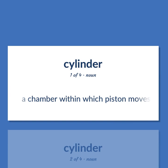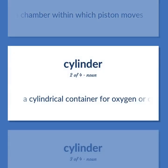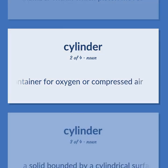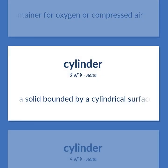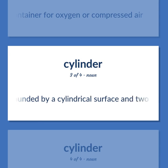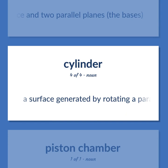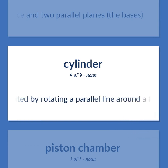Cylinder: a chamber within which a piston moves. A cylindrical container for oxygen or compressed air. A solid bounded by a cylindrical surface and two parallel planes — the bases. A surface generated by rotating a parallel line around a fixed line.